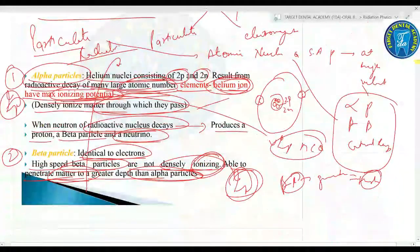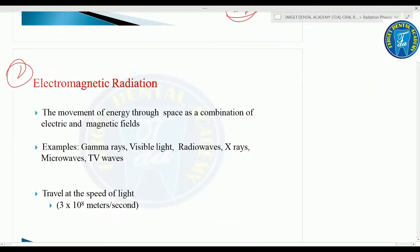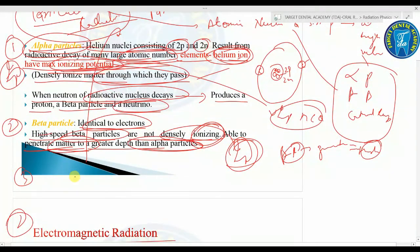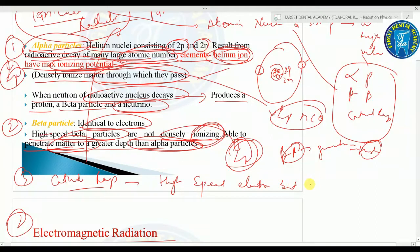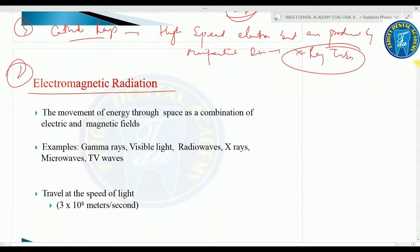This is all about particulate radiation. The third type of particulate radiation is cathode rays — these are also high-speed electrons but are produced by a manufactured device like X-ray tubes. Coming on to electromagnetic radiations.